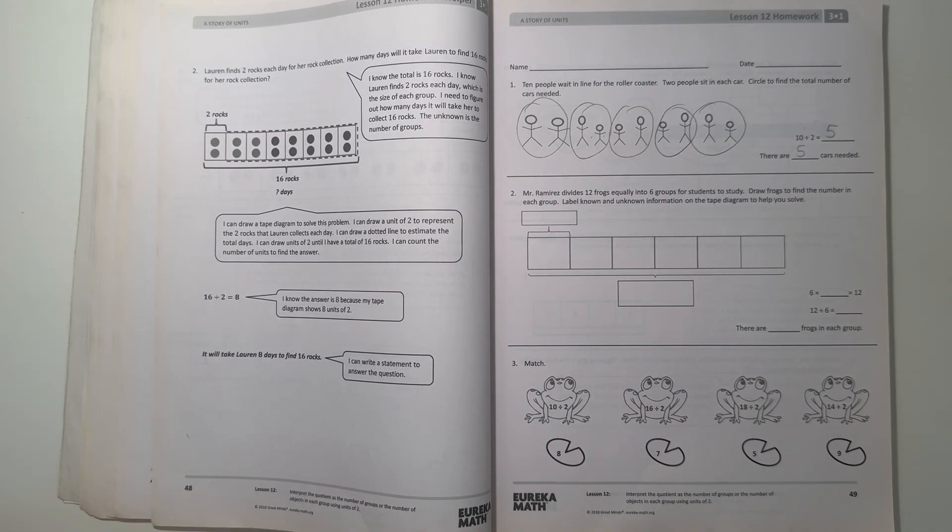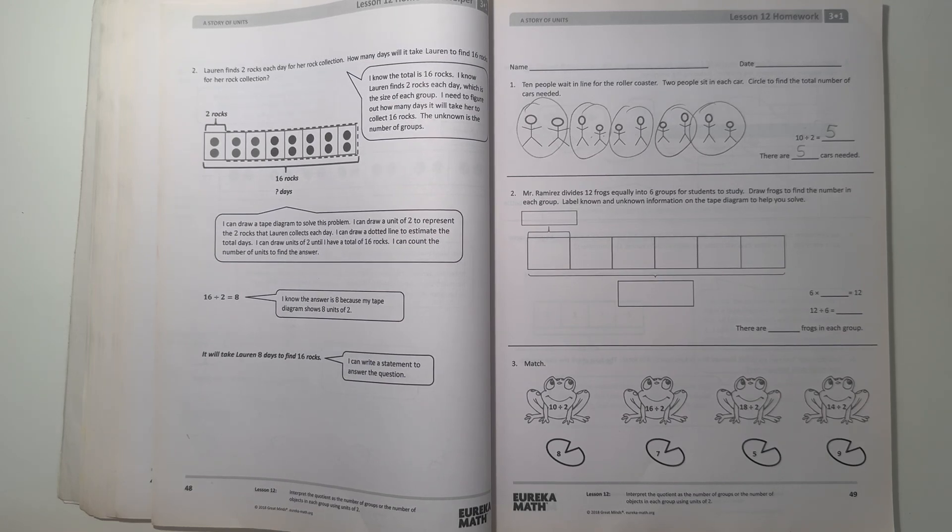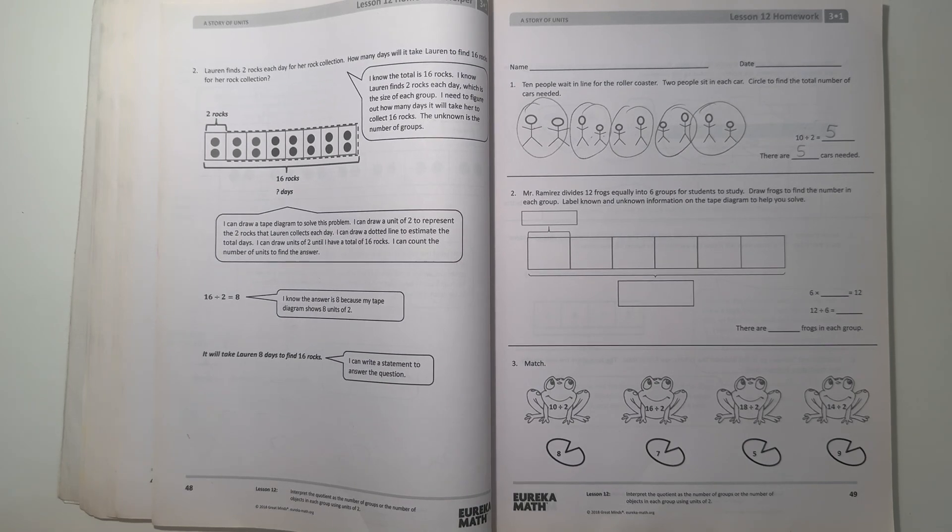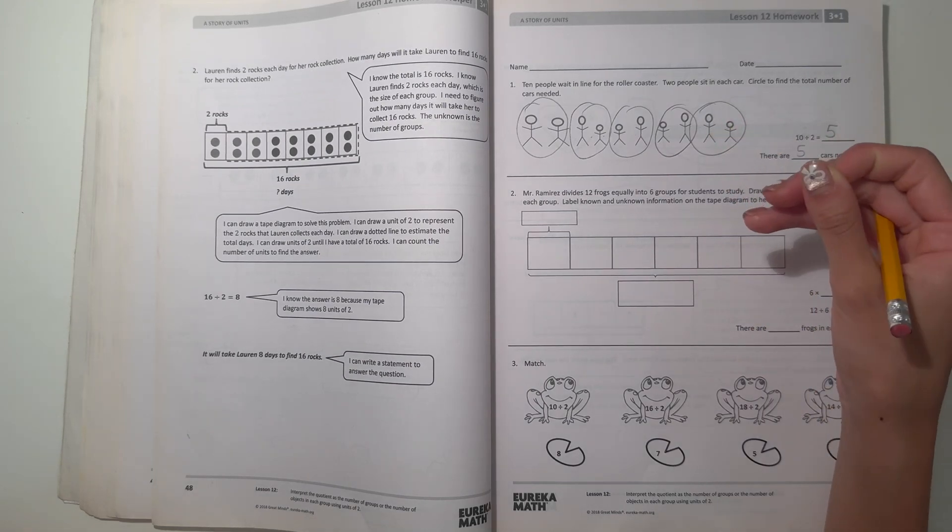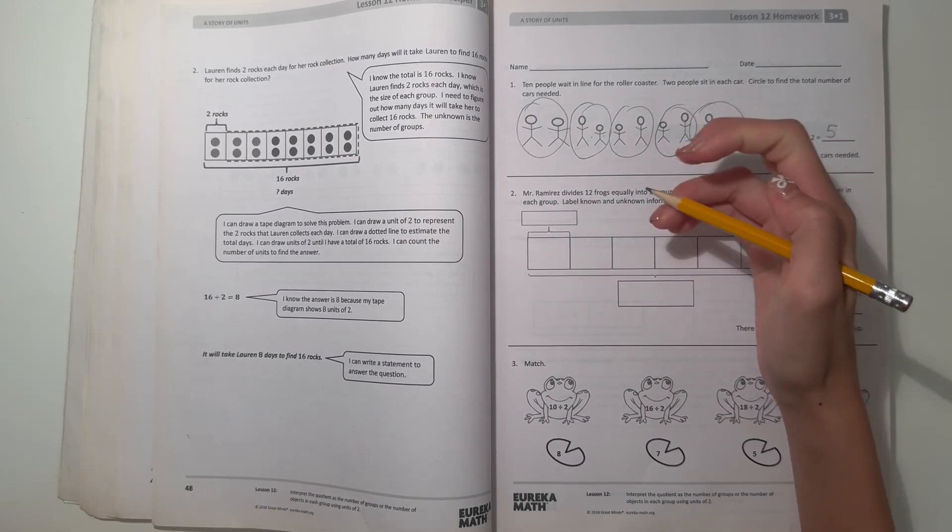Number 2, Mr. Ramirez divides 12 frogs equally into 6 groups for students to study. Draw frogs to find the number in each group. Label known and unknown information on the tape diagram to help you solve.